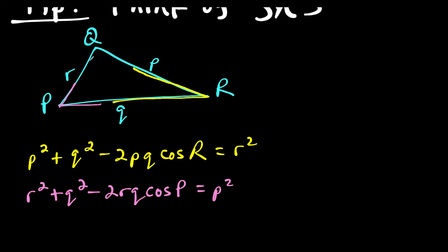And now if we do this one more time, this time for side R and side P, notice that angle Q is between those two sides. So we would have R squared plus P squared minus 2RP times cosine of angle Q equals side Q squared.